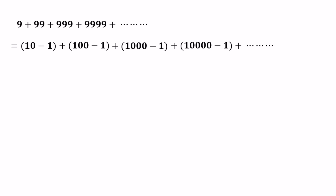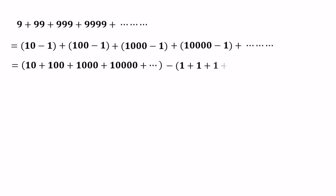Now we can group 10, 100, 1000, 10,000 and so on together in one bracket. And in another bracket we can write the remaining minus 1's.